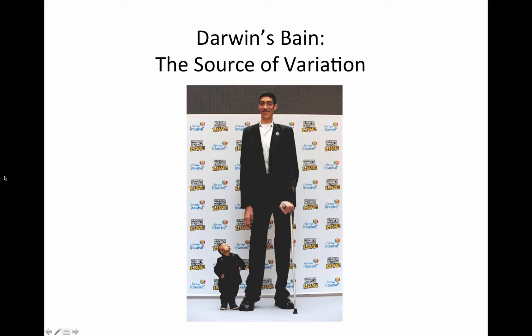Darwin's first postulate is that individuals vary, and we saw in class through the exercises that we did that this component is extremely important for making natural selection work.